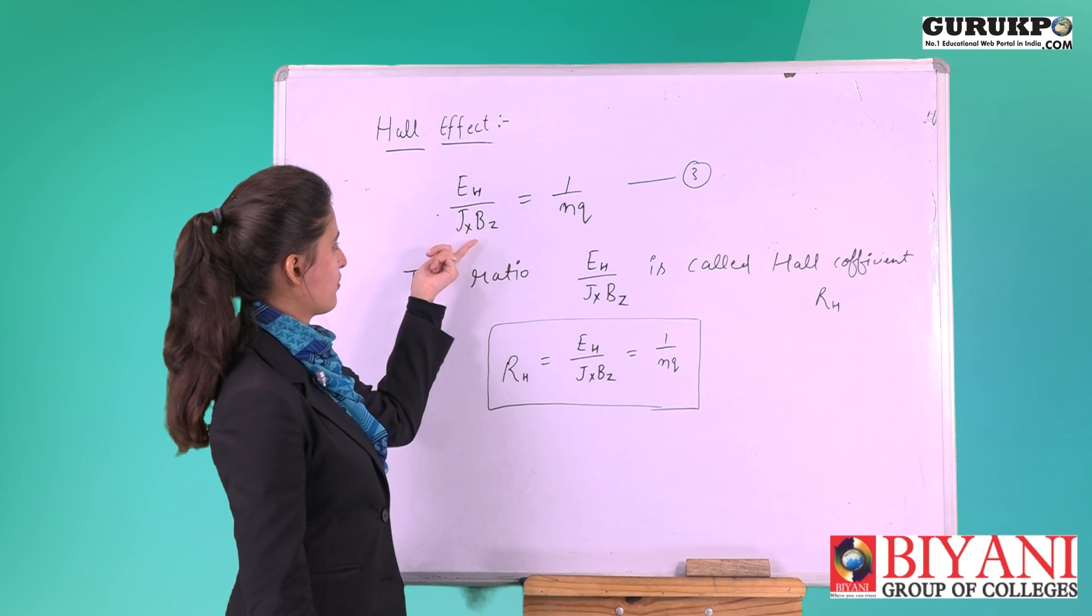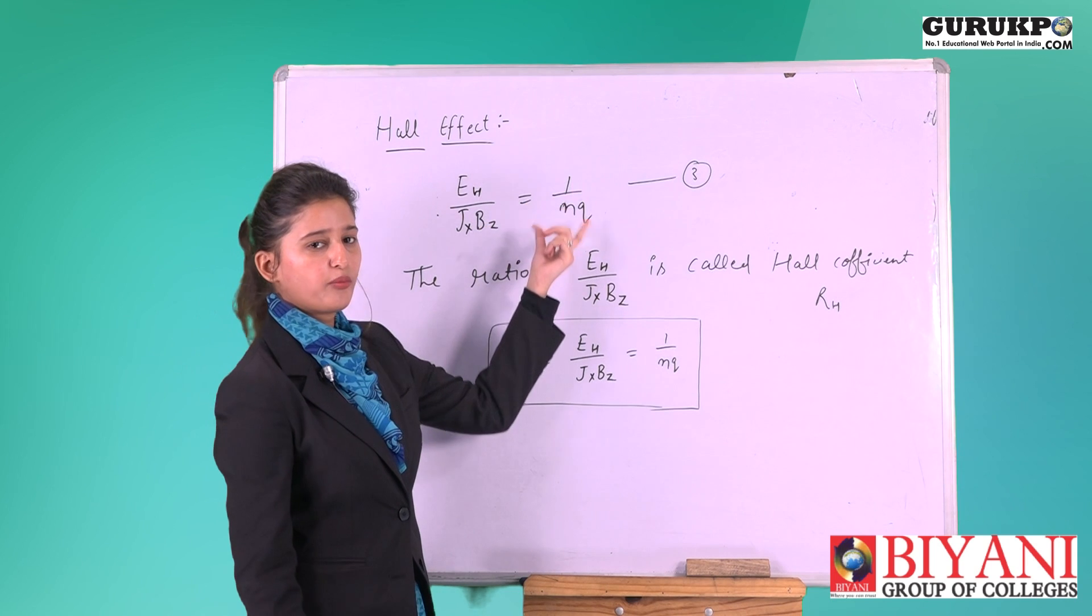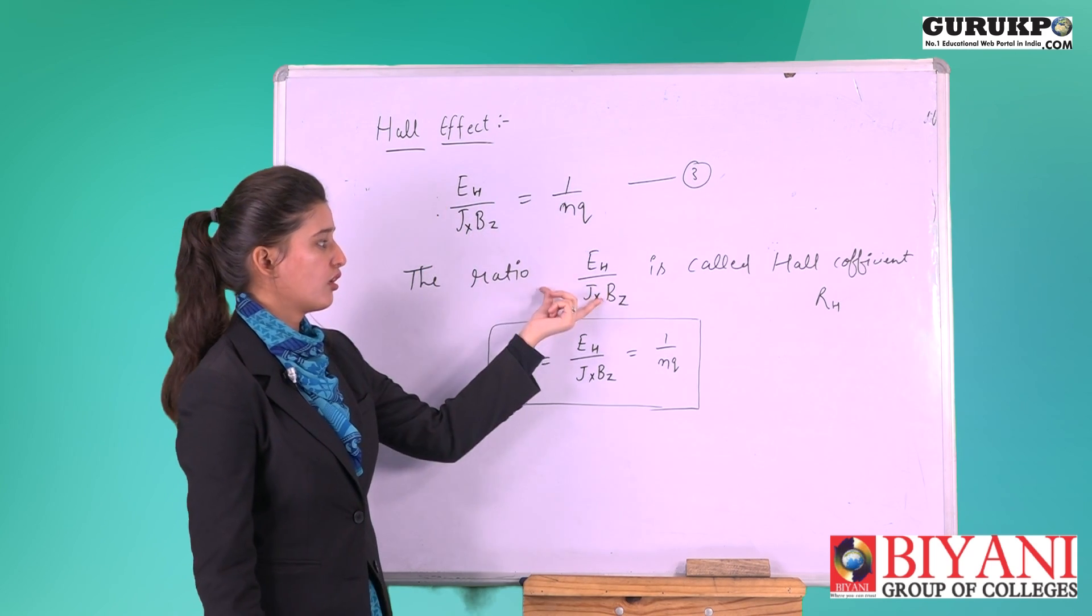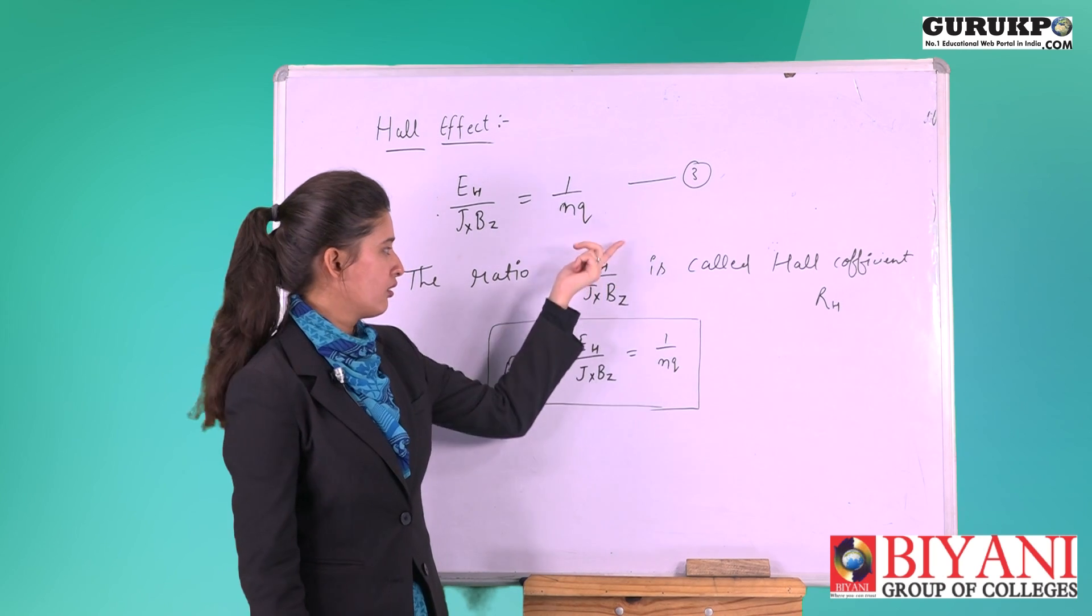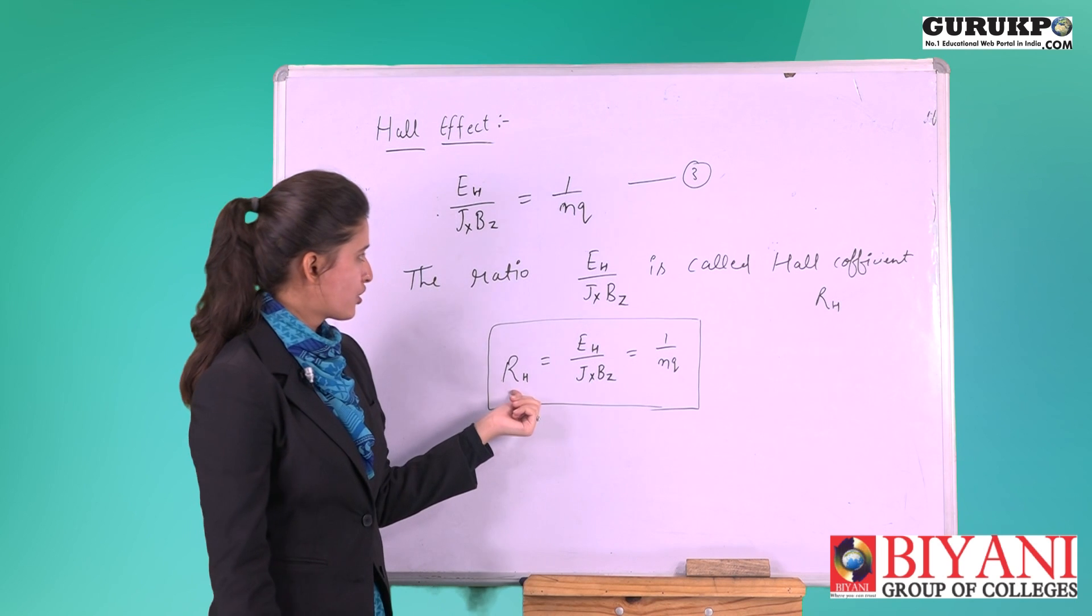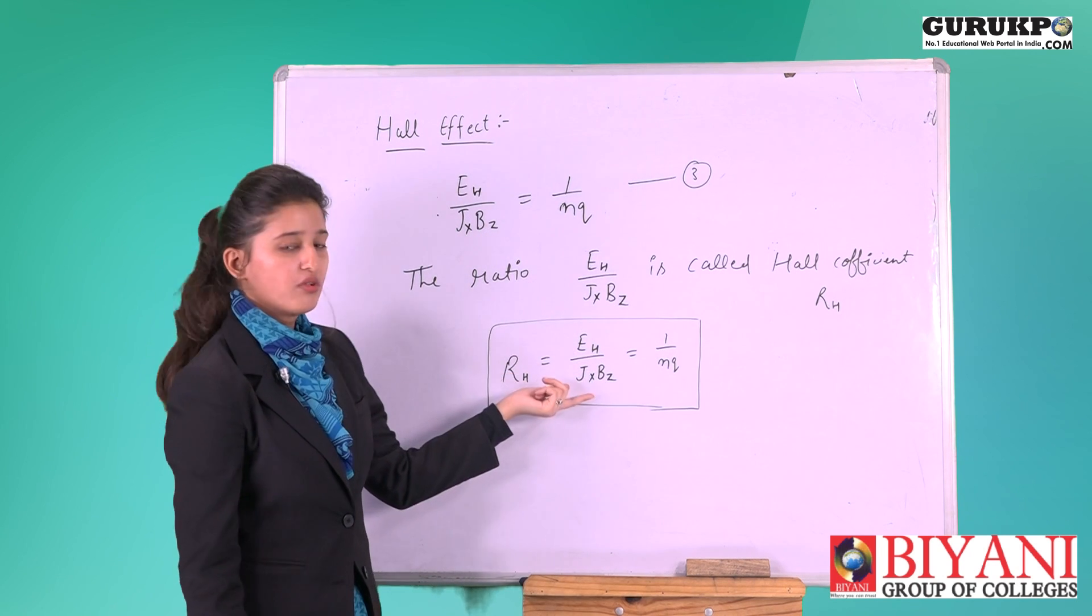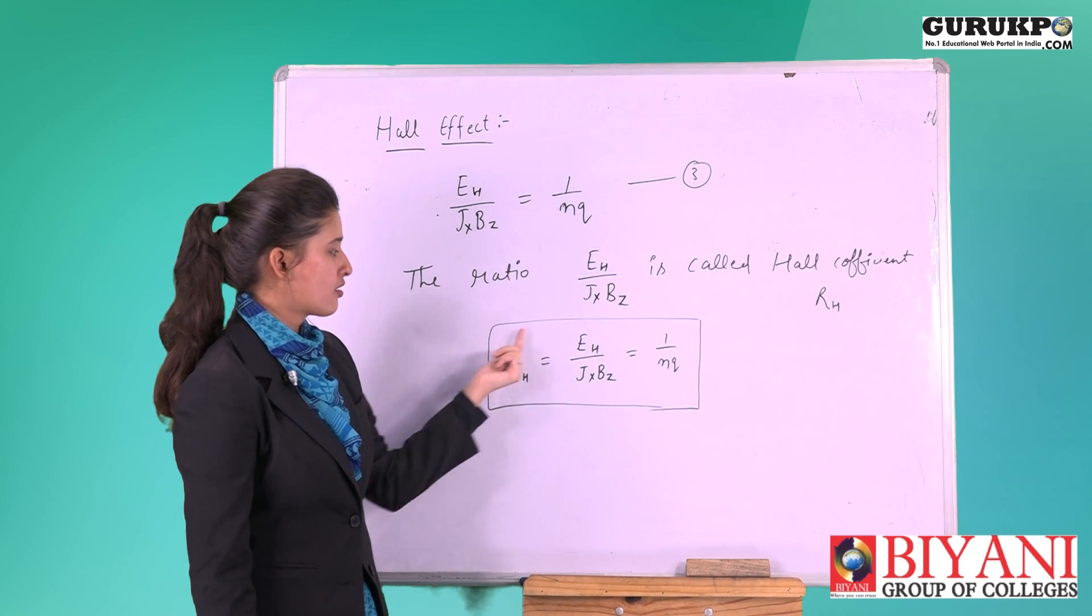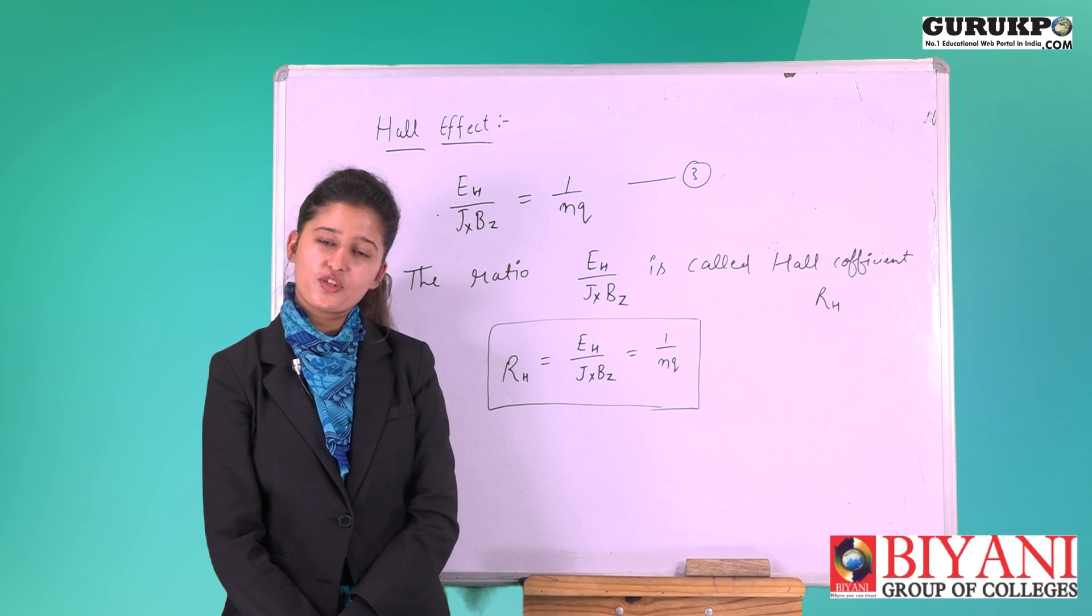This ratio E_h upon j_x B_z is called Hall coefficient, and name of this constant is R_h. R_h equal to E_h upon j_x B_z, and this is equal to 1 upon n q. This ratio is called Hall coefficient.